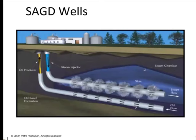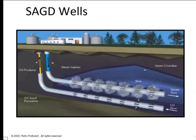Another application is SAGD wells — Steam Assisted Gravity Drainage — an enhanced oil recovery technique used for heavy oil. Two parallel horizontal wells are drilled side by side, spaced a few meters apart. High pressure steam is injected into the upper well, causing the heavy oil to become mobile and flow into the lower well. This is a very advanced technique used as part of enhanced oil recovery, and a lot of work is being done in this area.